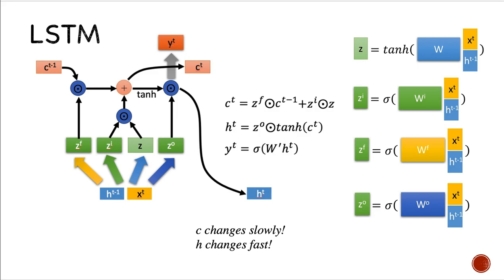The cell remembers values over arbitrary time intervals, and the three gates regulate the flow of the information in and out of the cell.